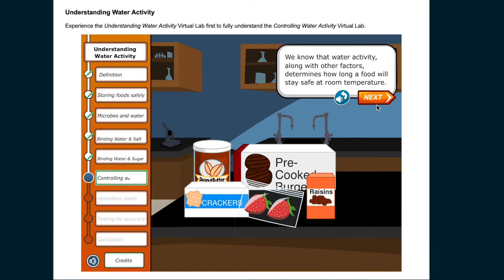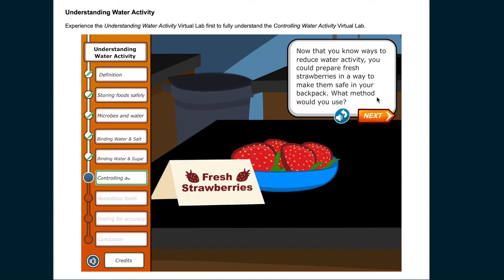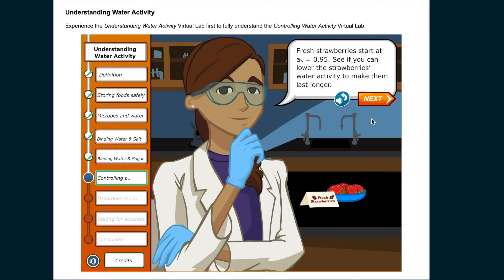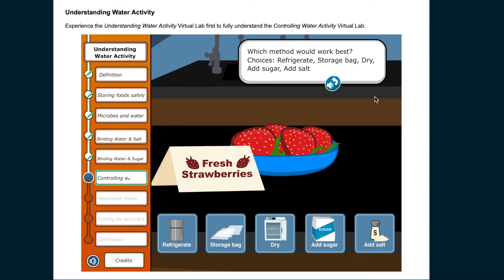We know that water activity, along with other factors, determines how long a food will stay safe at room temperature. Now that you know ways to reduce water activity, you could prepare fresh strawberries in a way to make them safe in your backpack. Fresh strawberries start at water activity 0.95. Which method would work best — refrigerate, use a storage bag, dry, add sugar, or add salt?